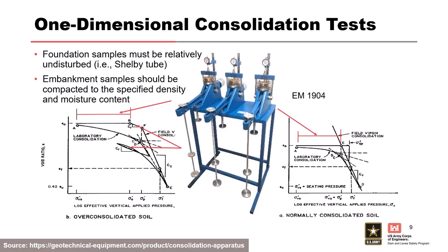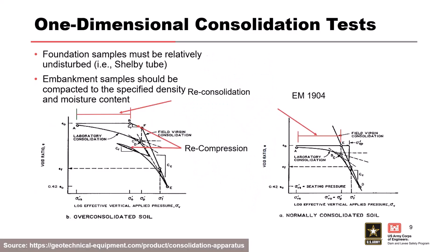Here's a picture of the consolidation test apparatus from the last module. We want Shelby tube samples — as least amount of disturbance as possible — for the odometer test, because sample disturbance affects the results considerably. So try to get the best sample you can in the field for the testing.